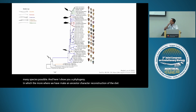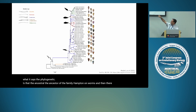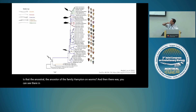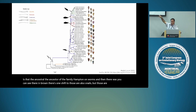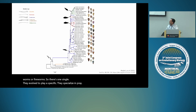Basically what the phylogeny says is that the ancestor of the cone snails, of the family, hunted on worms. Then there was one shift — you can see in brown — to fireworms specifically. So there is one single evolutionary event where they specialize in preying on fireworms.